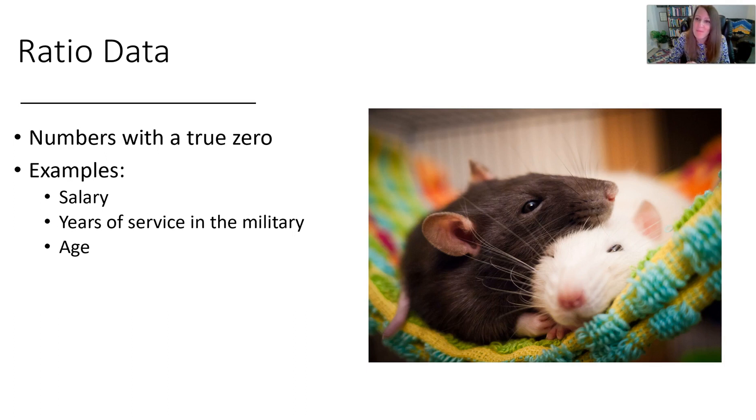My memory trick here is ratio - the root rat - and someone asking how many rats, how many pet rats do you own? You could say one, two, five, or you could say zero. And if you say that you have zero rats, that literally means you have zero rats. There's meaning to that zero, meaning that there's an absence of or none.